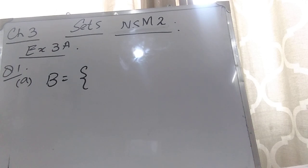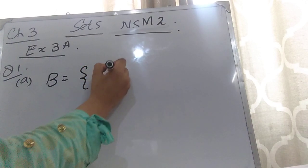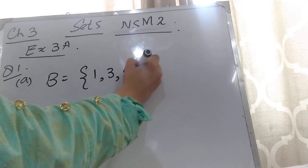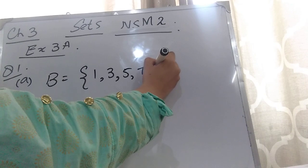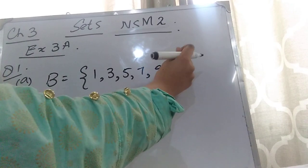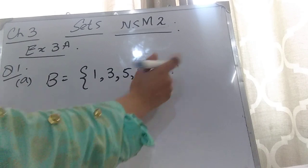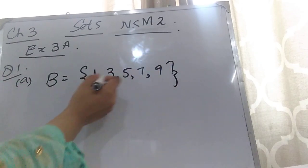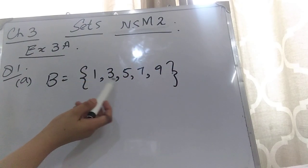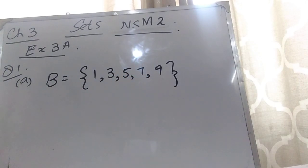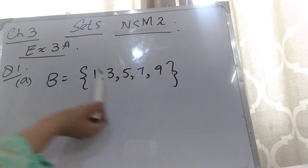You know that integers start from 1 and 1 is also an odd integer. So the elements are 1, 3, 5, 7, 9. I will not write 11 because they are saying less than 10. So your answer for part A is B = {1, 3, 5, 7, 9}. You can see there is no negative sign with them — these are positive, and these are the odd integers less than 10.